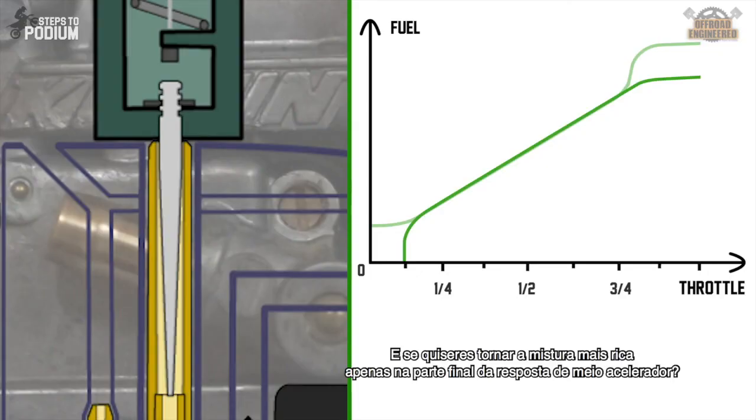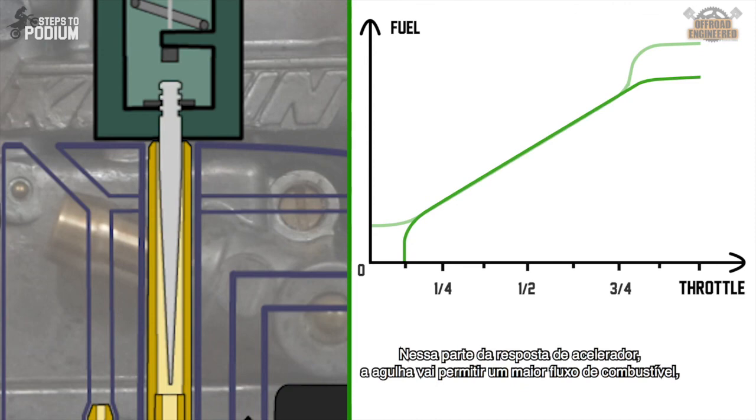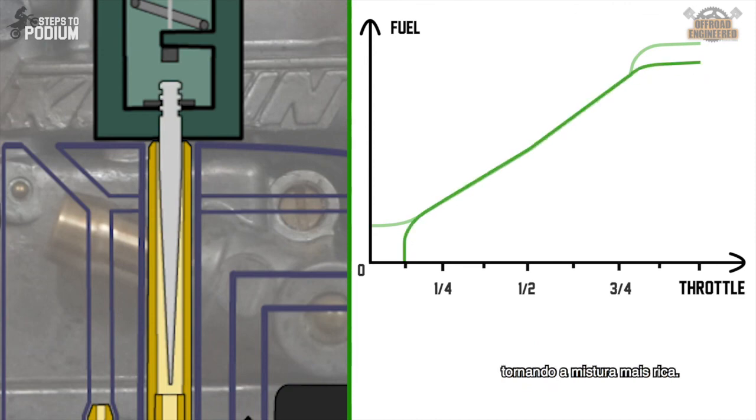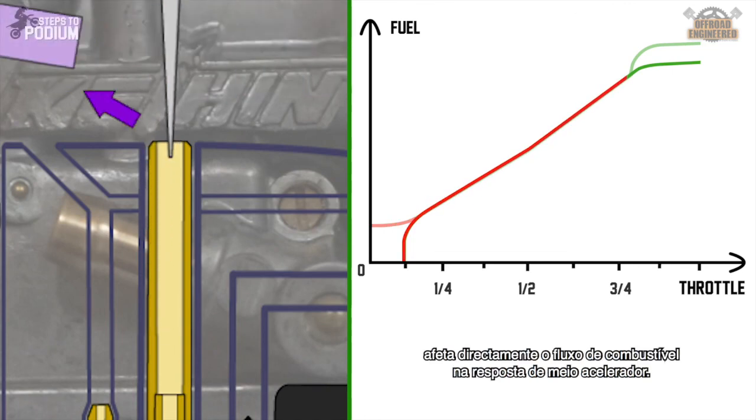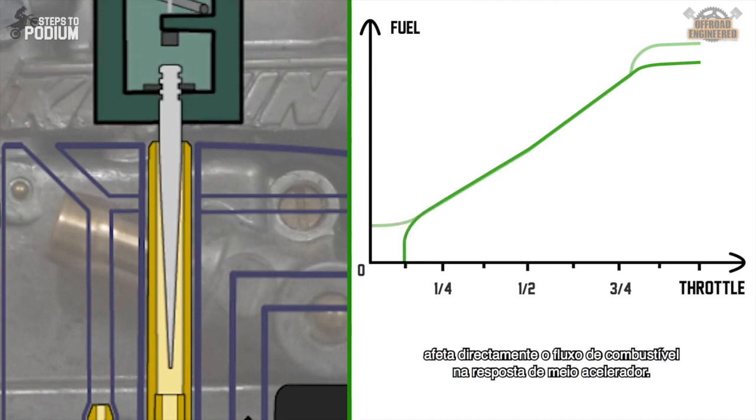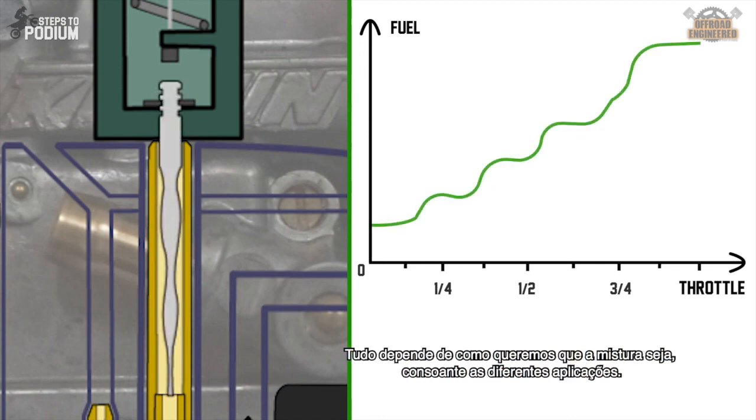What if you just want to make it richer on the higher part of the mid-throttle response? Just install a needle with a thinner tip. On that throttle range, the needle will allow more fuel through the needle jet, making the mixture richer. Changing the tapered shape of the needle will have a huge impact on the mid-throttle fuel flow. Different shaped needles will provide different engine responses and it all comes down to how you want the mixture to be for a specific application.